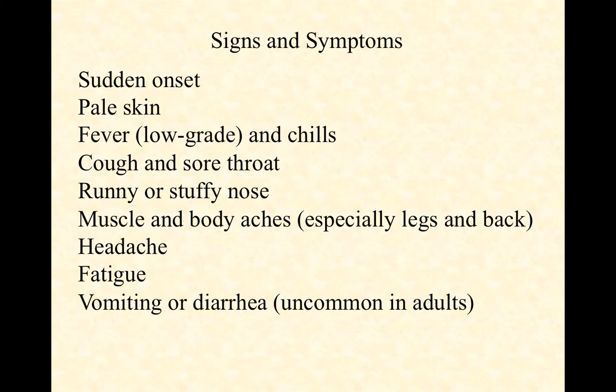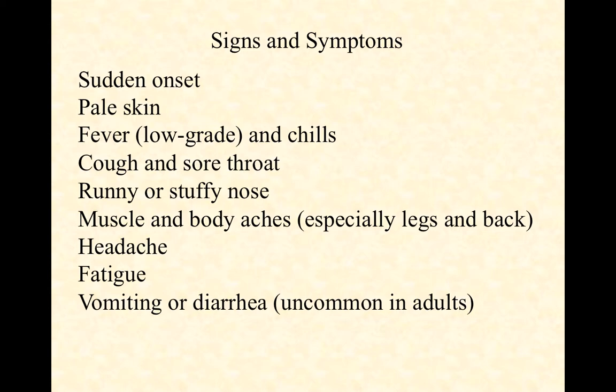Influenza usually has a sudden onset — typically within an hour or two, you go from feeling just fine to feeling pretty crummy, achy, maybe with a spiking fever. Within a day or two, the skin goes very pale, sometimes even a little bit green. Influenza 99 out of 100 times is going to cause a low-grade fever, and associated with that will be the chills — where you want to curl up in a ball, sometimes covered up in your blanket and other times wanting to kick it off.